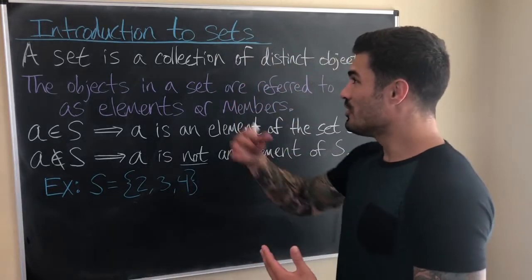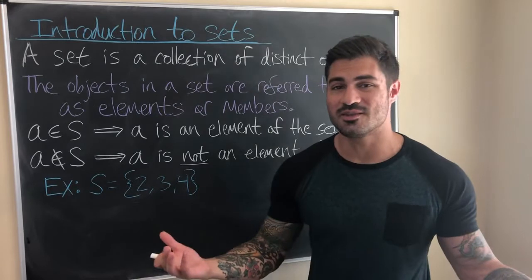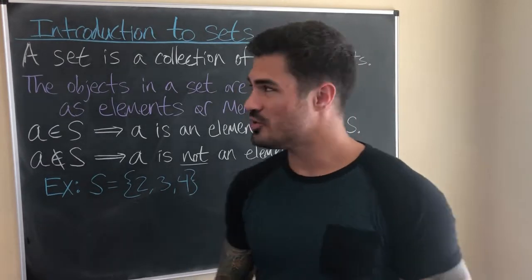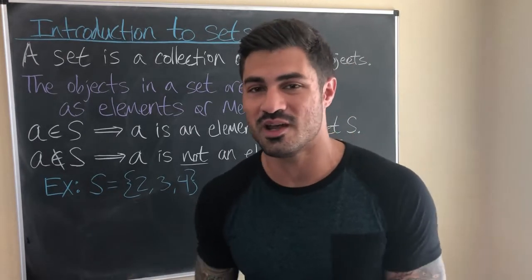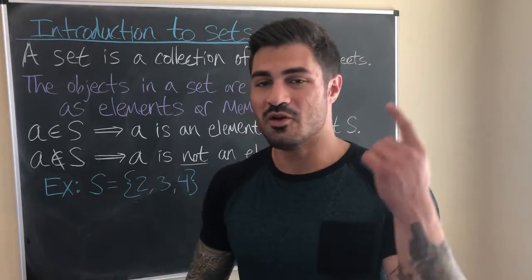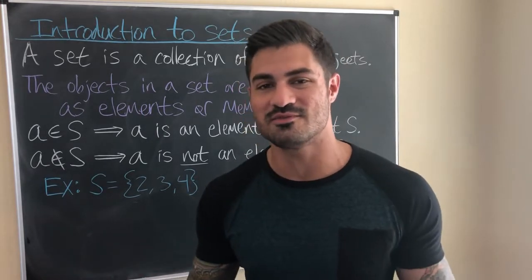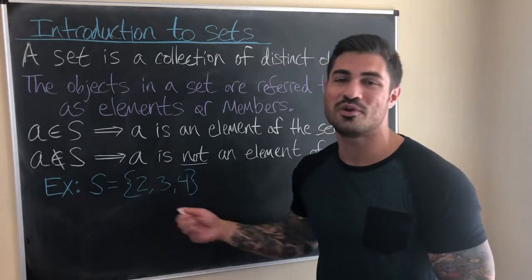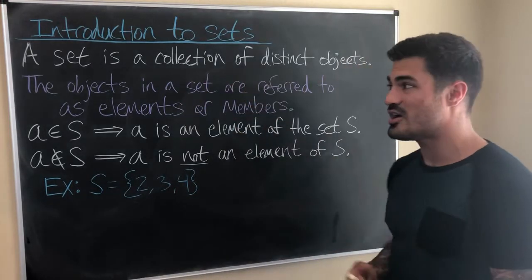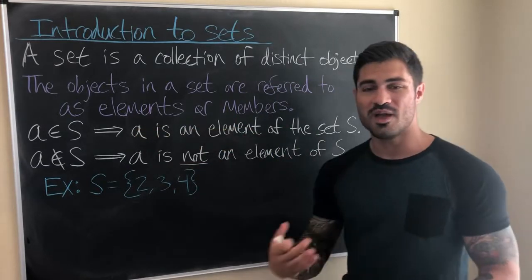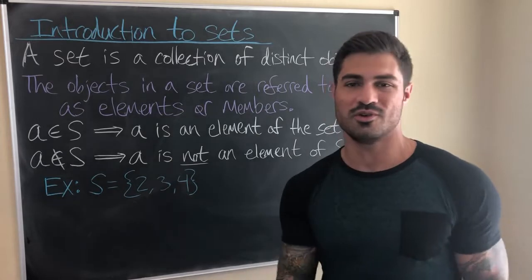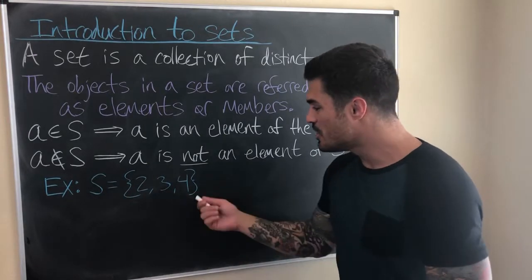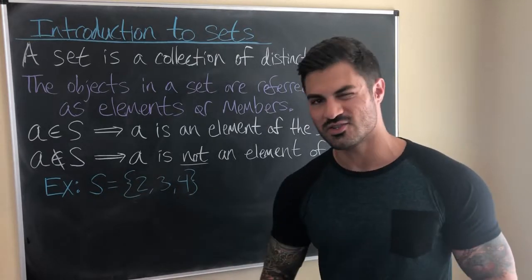A set is a collection of distinct objects. Usually when we deal with sets we are dealing with real numbers, but they're not restricted to real numbers — we can have a set of animals like pig, cow, moose. More typically we'd have something like {2, 3, 4}, a set of three real numbers. The objects in a set we refer to as elements or members. So 2 is an element of set S, 3 is an element of set S, and 11 is not an element of set S.